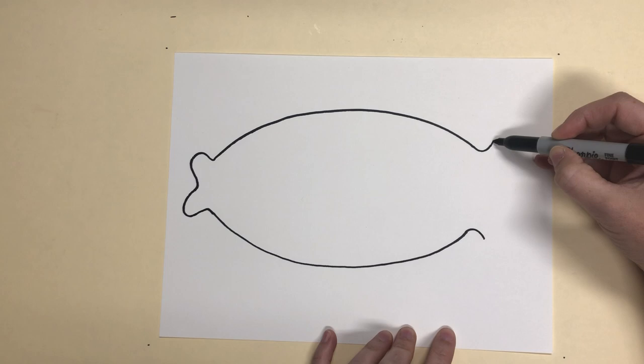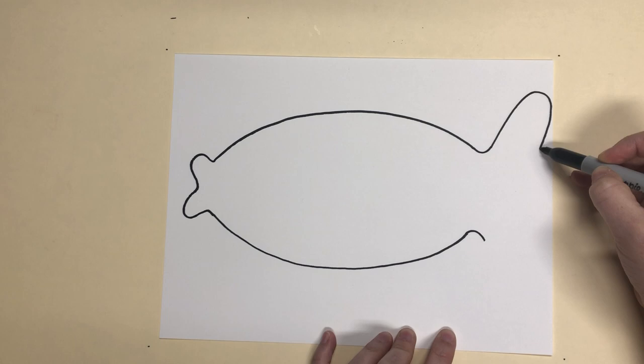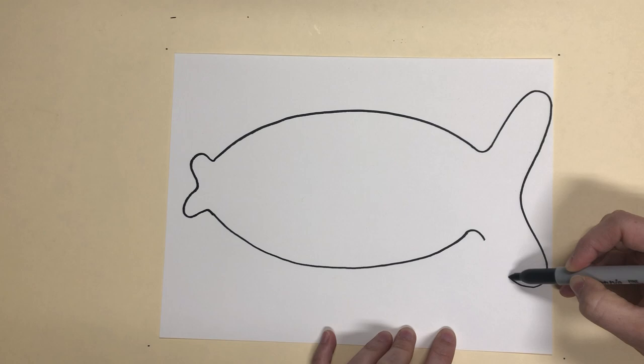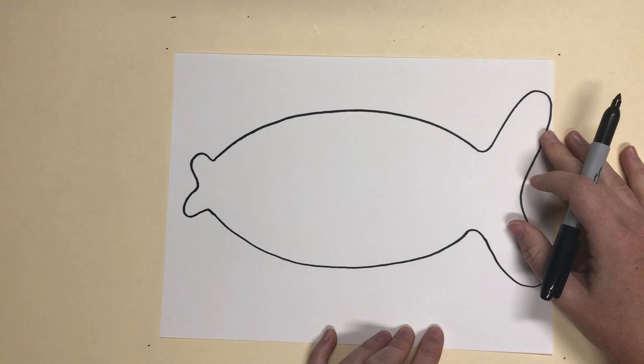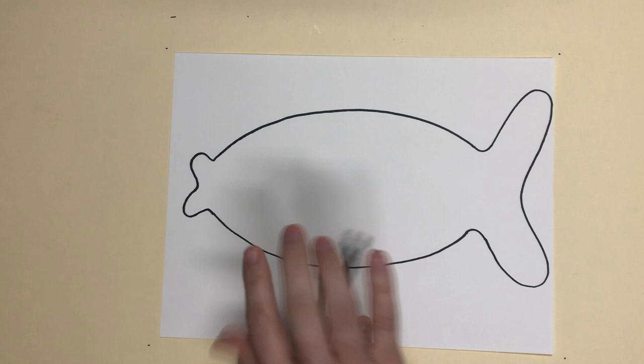Now let's get that tail on there. Come up all the way to the edge of the paper and start to come in and out and back in. You can make it your own way. This is just the way that I'm kind of drawing it for this project. I've drawn fish lots of different ways.